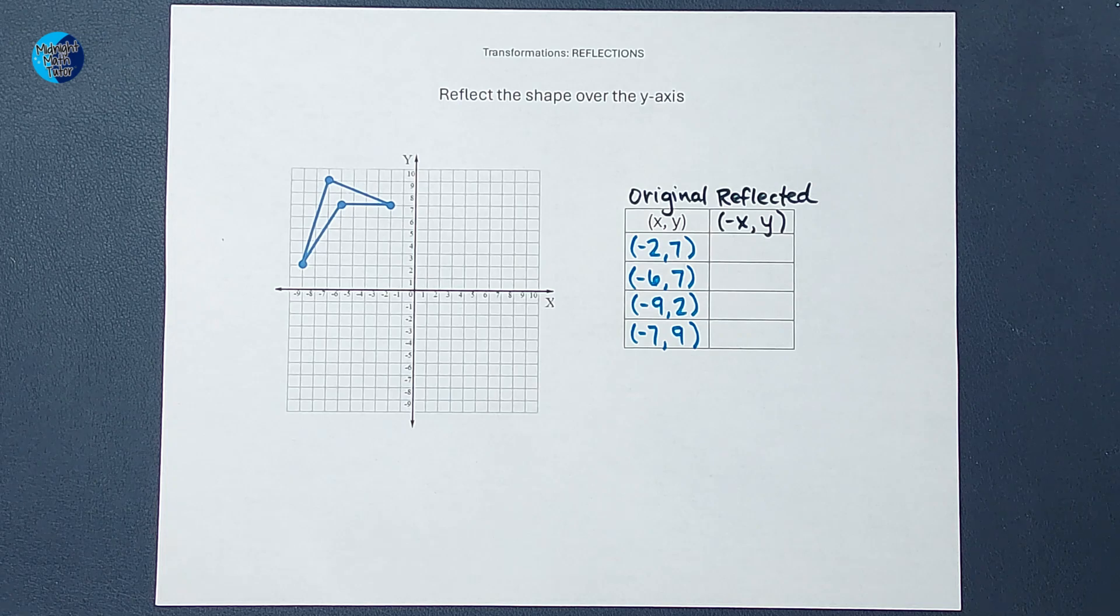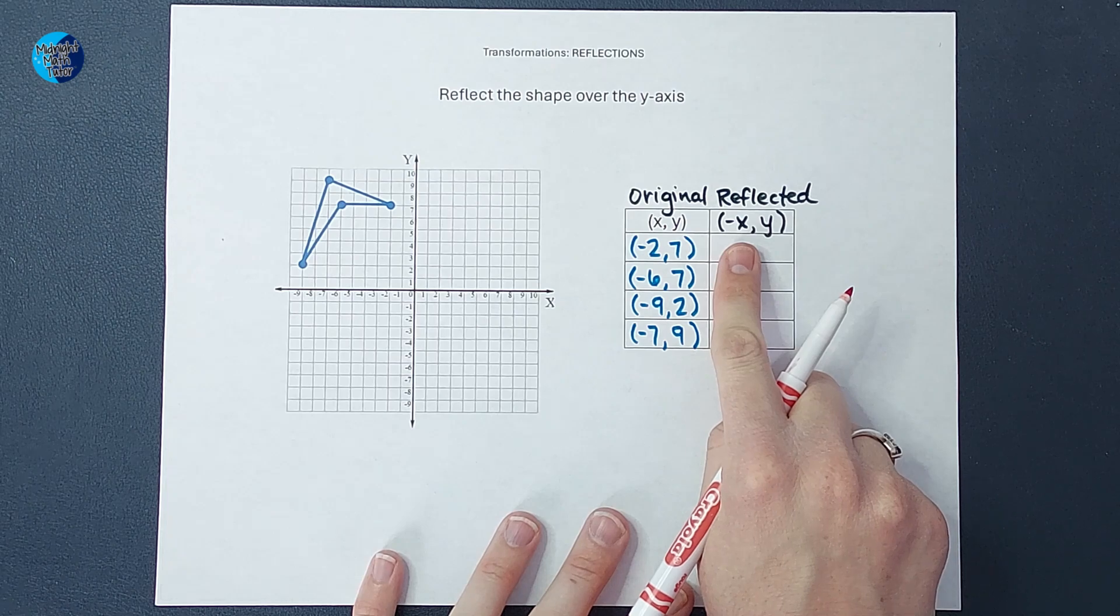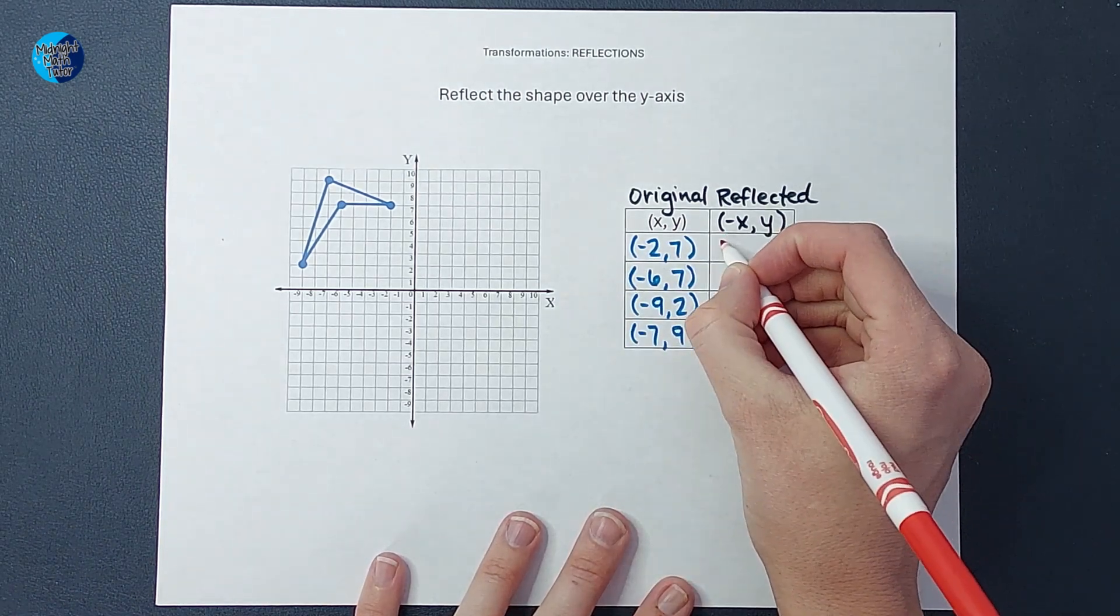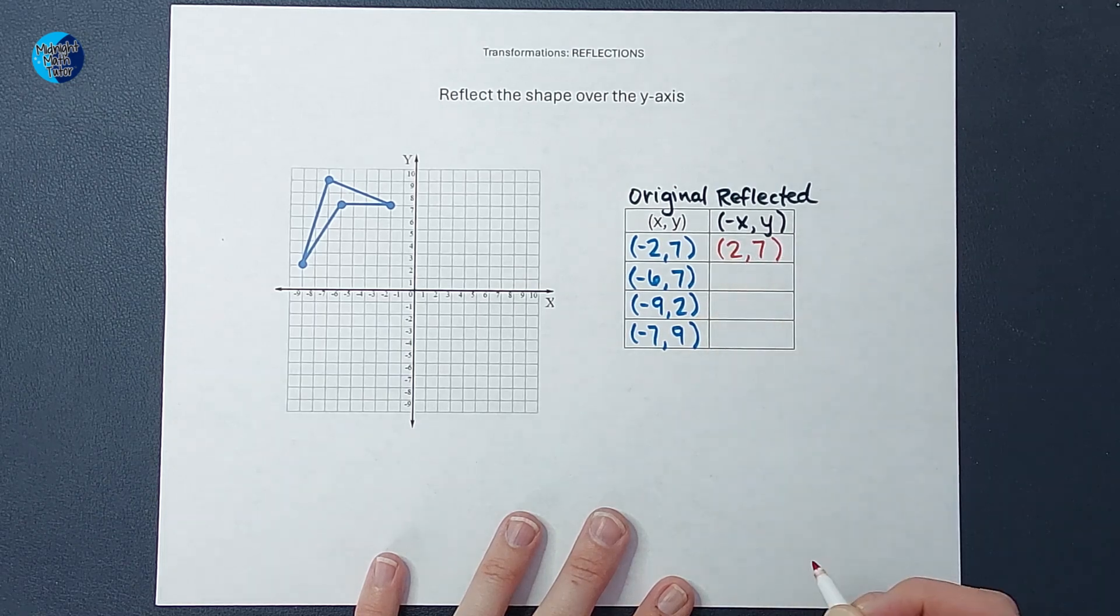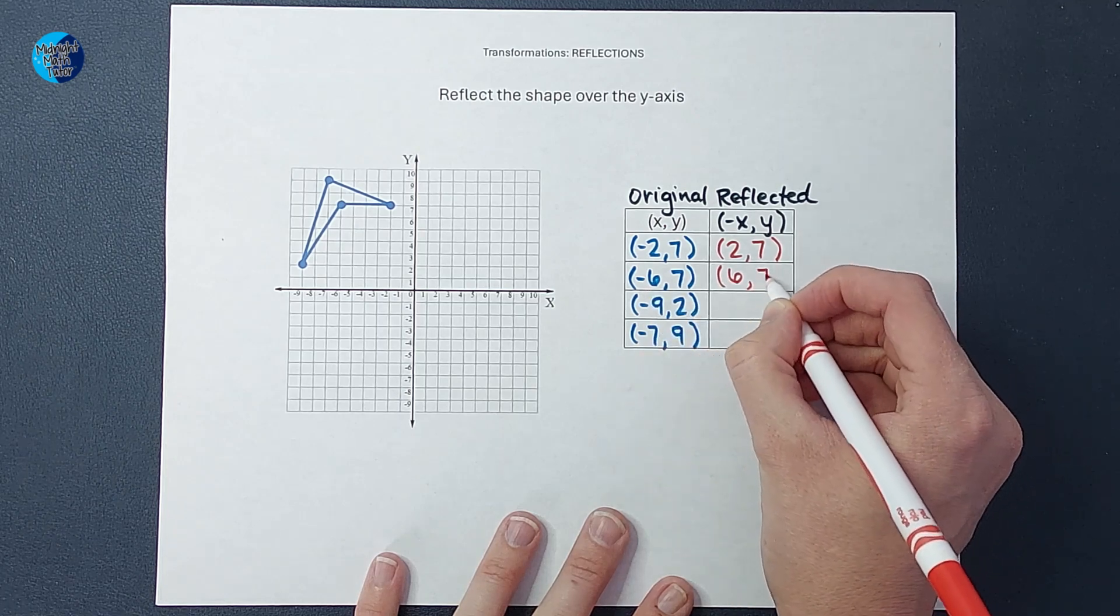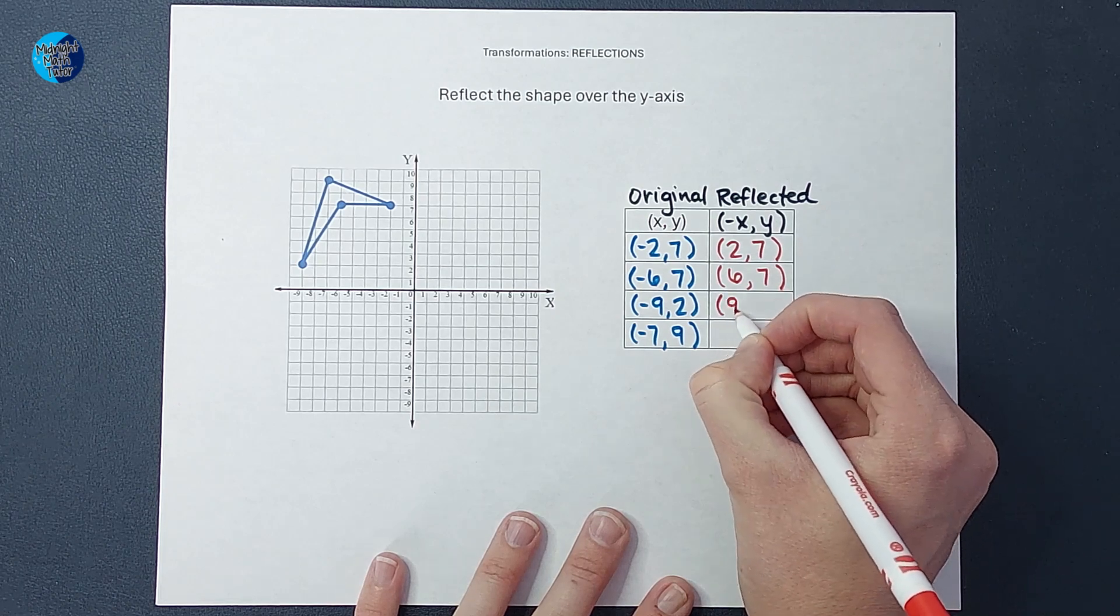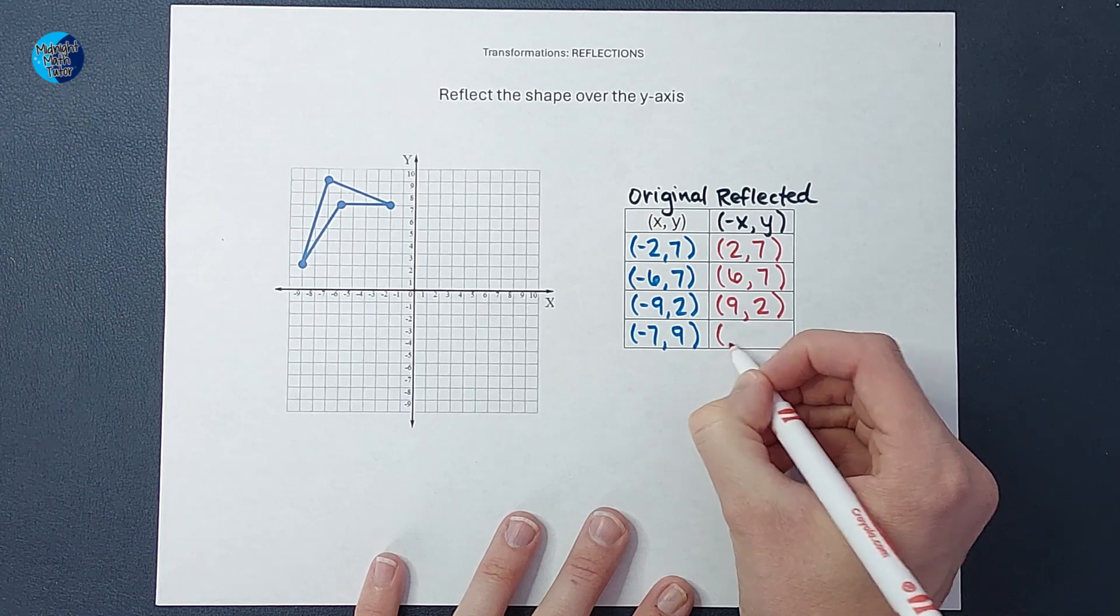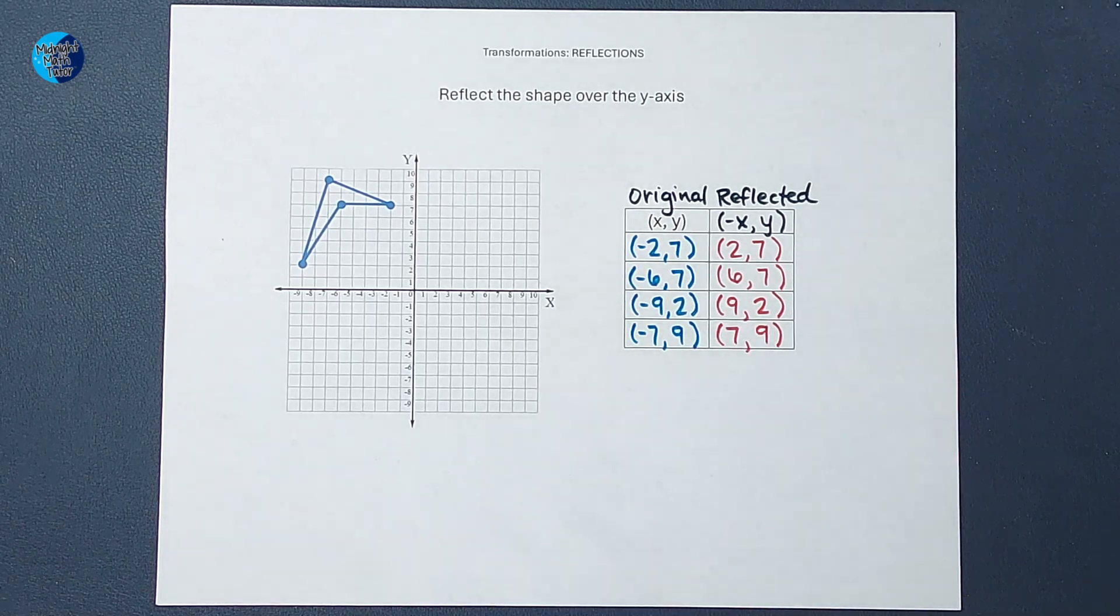Now to get the shape that is reflected over the y-axis, I'm just going to change x's sign. So here x is a negative two, so we're going to have positive two and y stays the same. I'm going to change x's sign so it's negative, so it's going to be positive and y stays the same. Change that negative nine to a positive nine and y stays the same. Change the negative seven to positive and y stays the same.